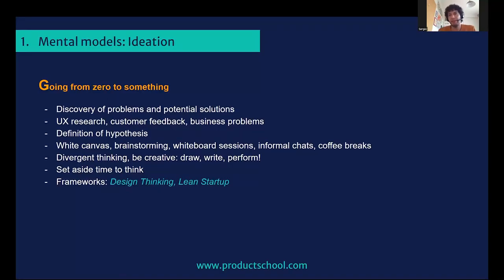In the first stage — ideation — this is where the magic happens. Here's where you start discovering different problems and imagining what a solution could look like. Here's where you can do a lot of UX research, speak with different stakeholders, and be very creative on defining different hypotheses. I like to see this stage as a white canvas where you just go and brainstorm. You can do whiteboarding sessions, you can draw, write, perform. It's very divergent — not really caring where all this is going; it's just about generation of different ideas.